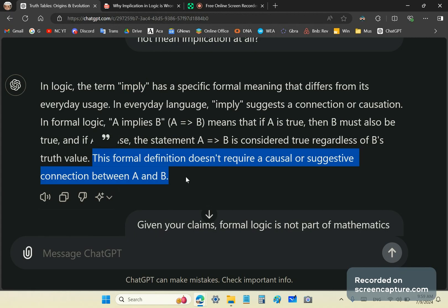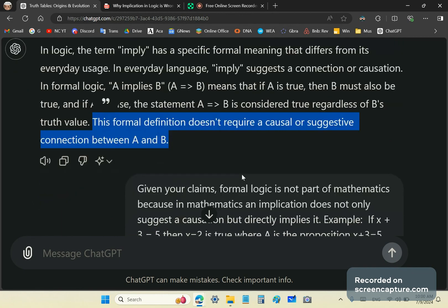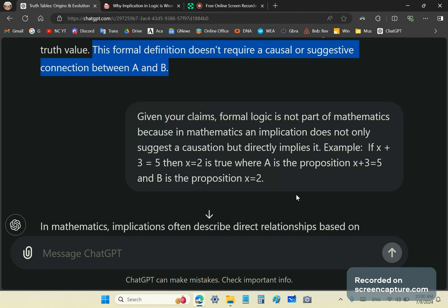It ends up by saying this formal definition doesn't require causal or suggestive connection between A and B. That is typical hand-waving by set theory professors and logicians. It's actually a red herring because it distracts and obfuscates and doesn't answer the question. So my response to that is, given your claims, formal logic is not part of mathematics because in mathematics an implication does not only suggest a causation but directly implies it.